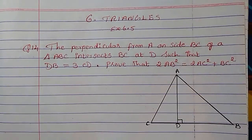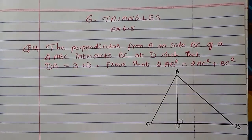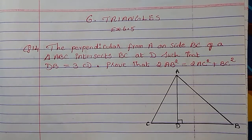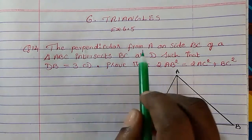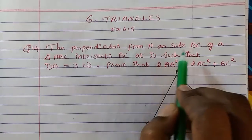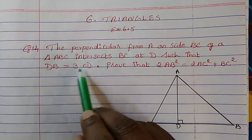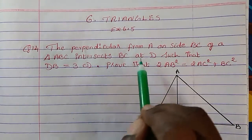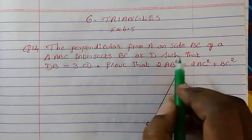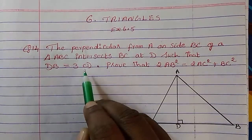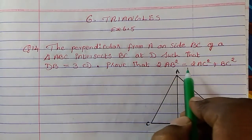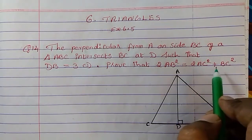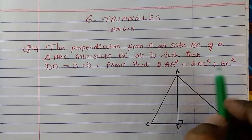Hi everyone, welcome to Mash Math. Today we are going to study Chapter 6 Triangles, Exercise 6.5 Question 14. The perpendicular from A on side BC of a triangle ABC intersects BC at D such that DB equals 3CD. Prove that 2AB² equals 2AC² plus BC².